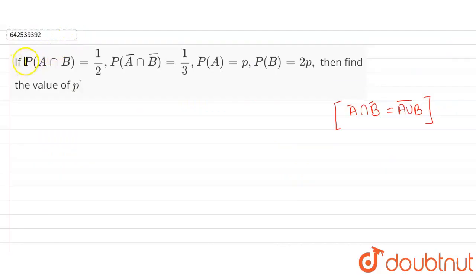In this question, we have given that P(A∩B), the probability of A intersection B, is 1/2, and probability of A̅∩B̅ is 1/3. P(A) = p and probability of B is 2p. We have to find p.